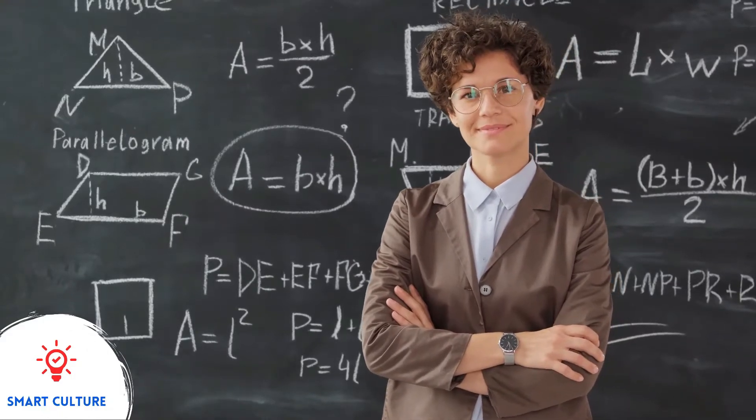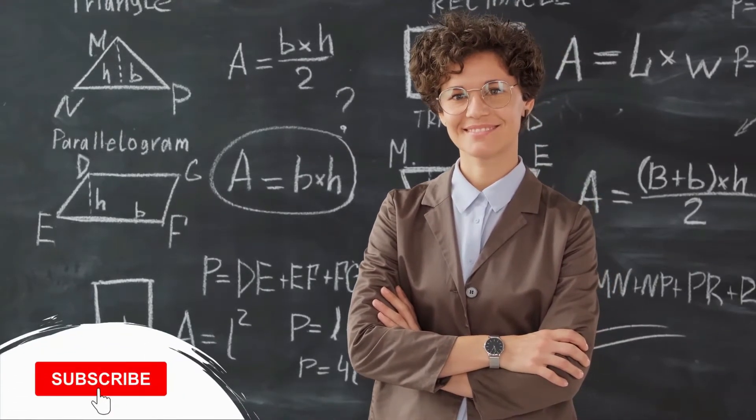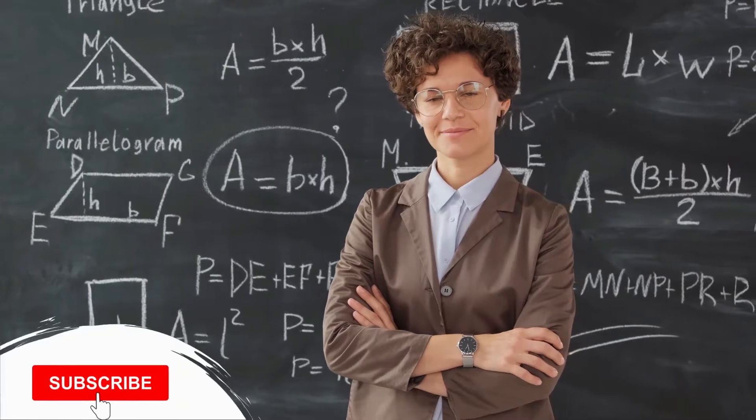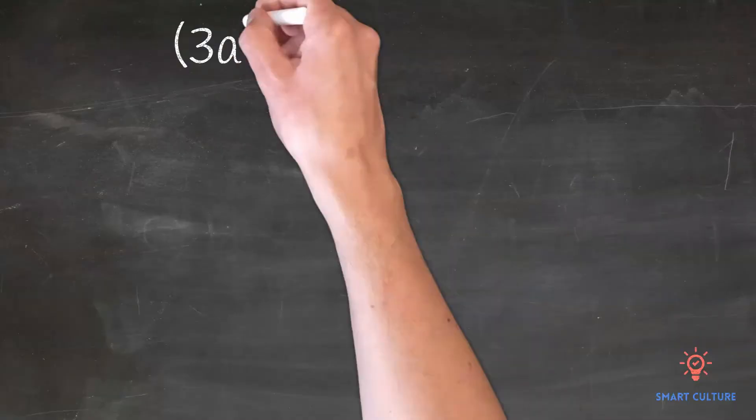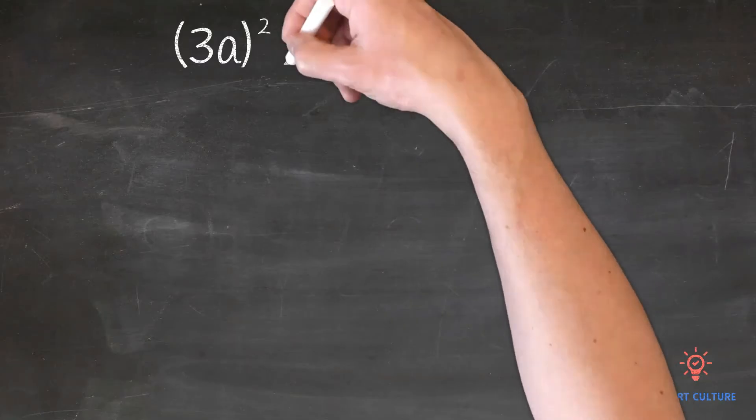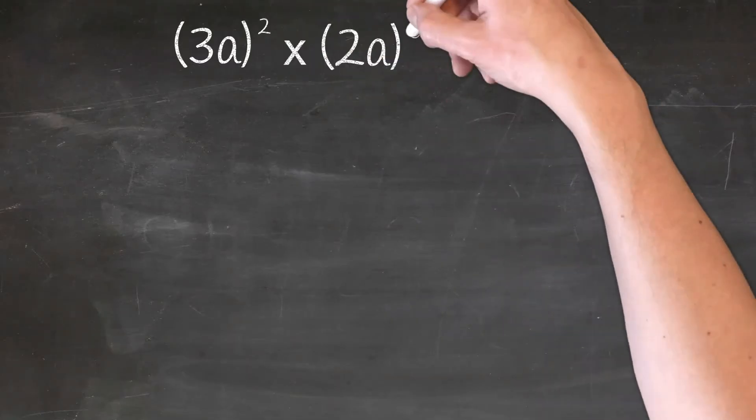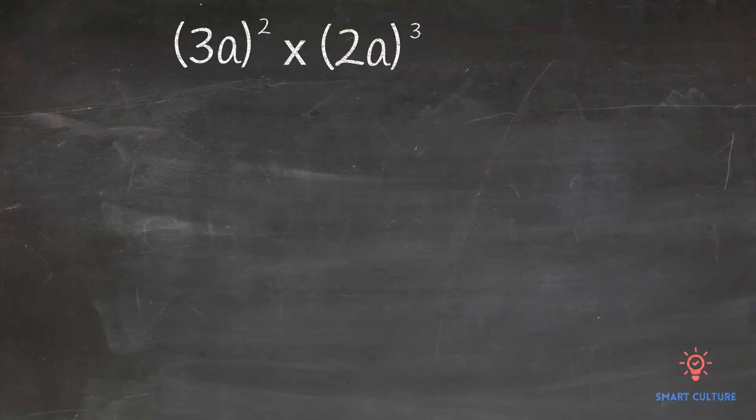Smart Culture Mathematics. So here we have 3a raised to the power of 2 times 2a raised to the power of 3.